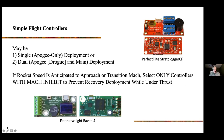Dual deployment is an excellent idea because you won't have to walk as far to recover your rocket. You have a small drogue chute deployed at apogee, and then a barometric sensor detects a threshold — say 800 feet — to deploy the main chute. That way you're not walking a mile or two to pick up your rocket, especially important in high winds at the launch site.